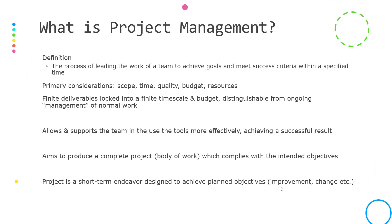What is project management? By definition, it's the process of leading a team's activities to achieve goals within the specified time. There are important considerations to keep in mind: scope, time, quality, budget, and resources. A project is distinguishable from managing normal work because the objectives are locked into a finite timescale. This framework allows the team to be more successful, aiming to produce a complete body of work complying with the objective. It's a short-term endeavour solely designed to fulfil intended objectives.